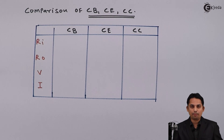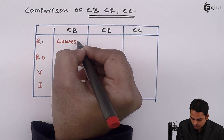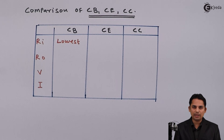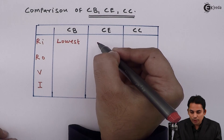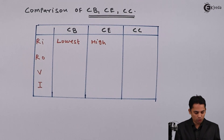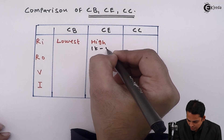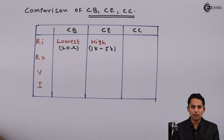In case of common base amplifier, input impedance is lowest — it is in the range of 20 ohms. Input impedance in case of common emitter amplifier is in the range of 1 kilo to 5 kilo ohms, so it is considered as medium or moderate, but since kilo values can be considered high, we write input impedance for common emitter amplifier as high, in the range of 1 kilo to 5 kilo ohms. For common collector amplifier, the input impedance is highest, in the range of 1 to 20 kilo ohms.